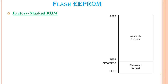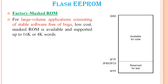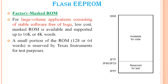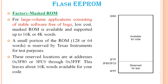For factory masked ROM, large-volume applications consisting of stable, bug-free software can use low-cost masked ROM, supporting up to 16K or 4K bits. A portion of the ROM is reserved by Texas Instruments for their test purposes, and these reserved locations are at specific addresses; the remaining locations are available to the user.